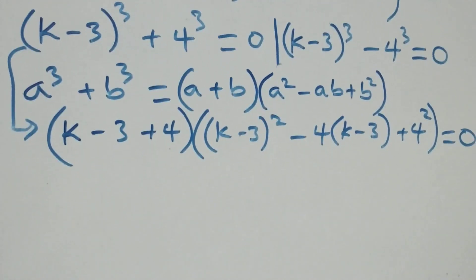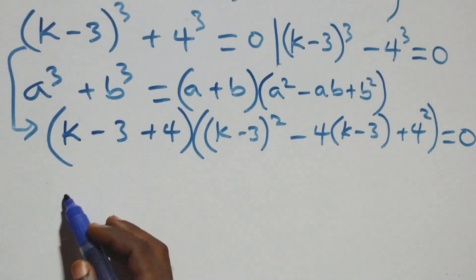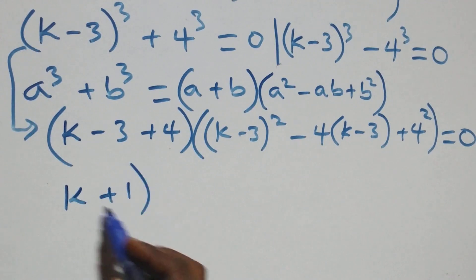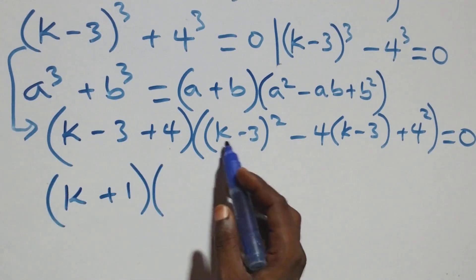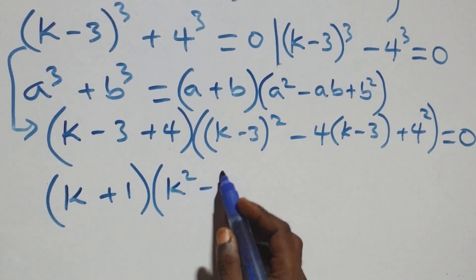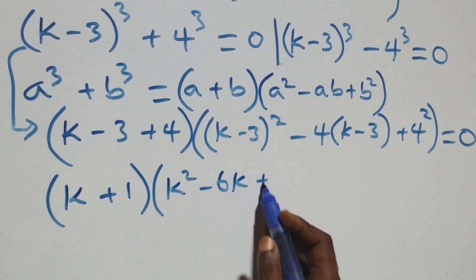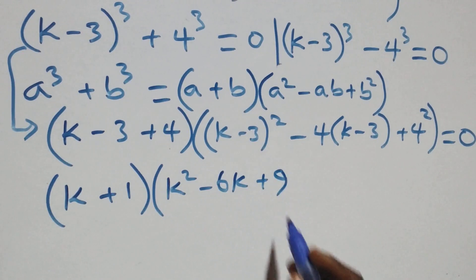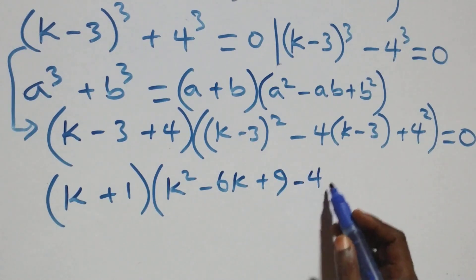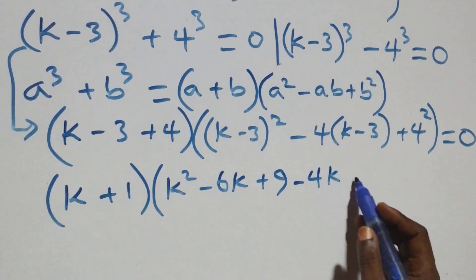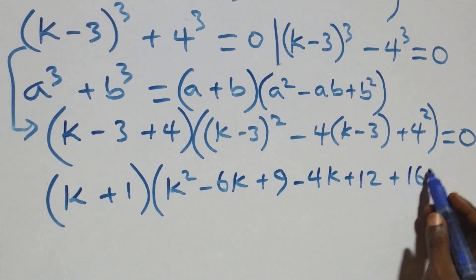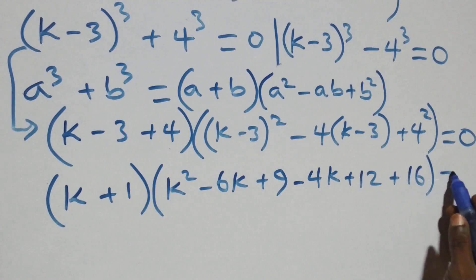The next step: this bracket gives (k + 1). The open bracket expansion becomes k² - 6k + 9, then minus 4 times (k - 3) which gives minus 4k plus 12, then plus 4 squared which is 16, close bracket, equals zero.